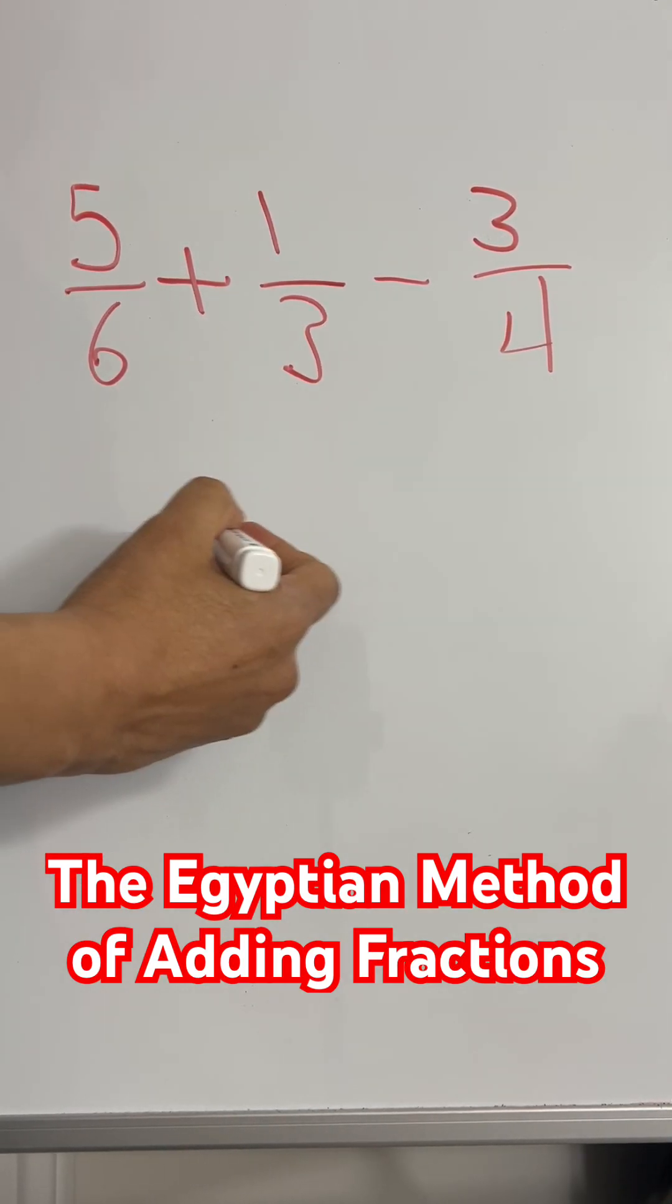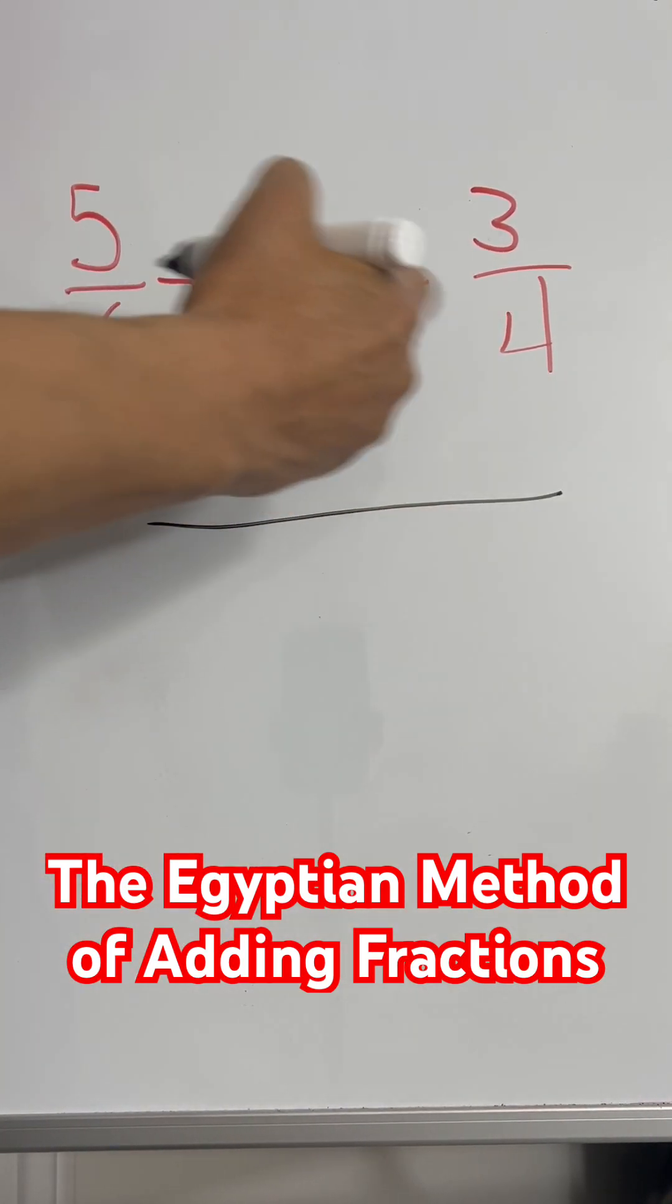Adding and subtracting three fractions. Make a long line, look for the common denominator.